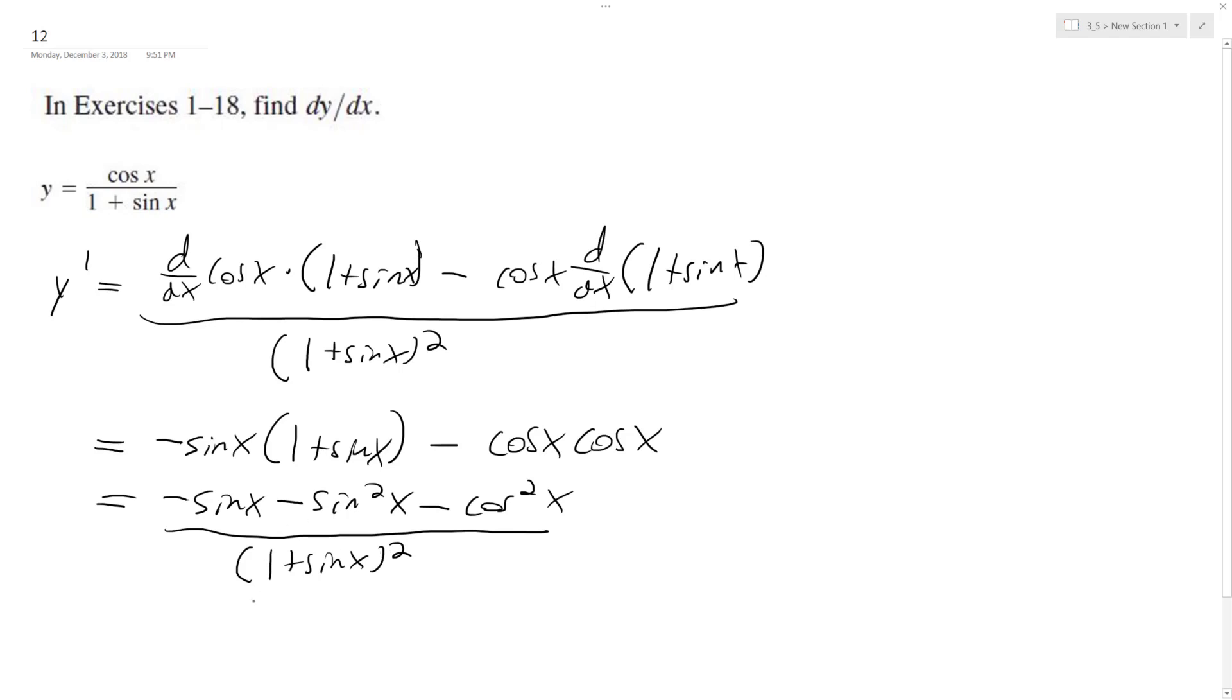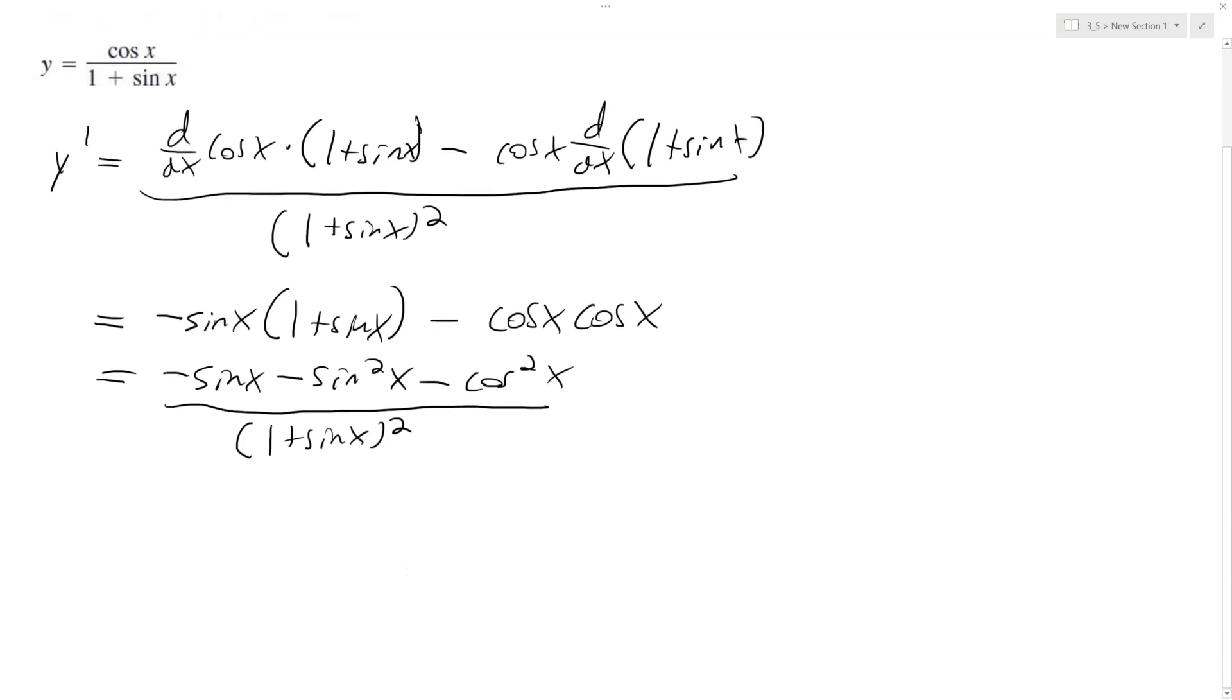So there's going to be some tricks I can use here. If you notice here, I can factor out a minus 1, so what I end up with is minus sine x minus quantity sine squared x plus cosine squared x. And this is a trig identity. This is equal to 1, so I just get rid of that.